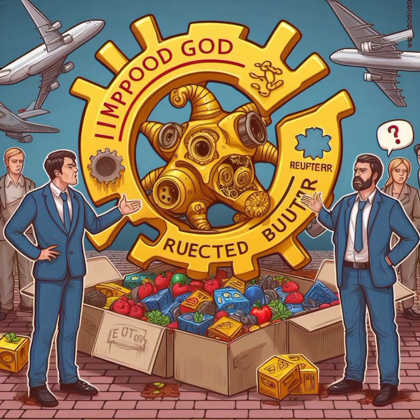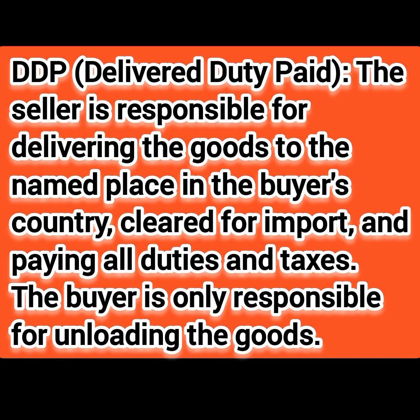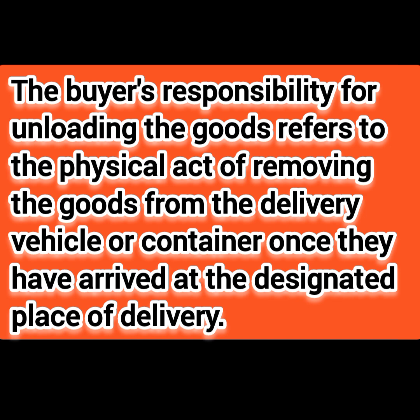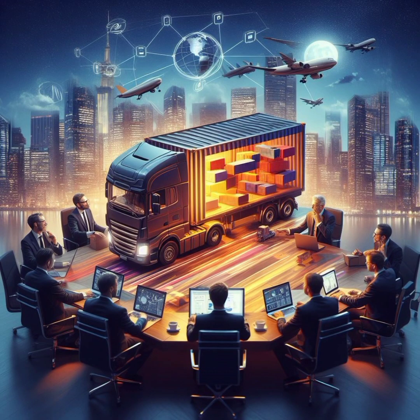If the buyer still says this is not good enough and wants the best offer, you give him the final offer — clause seven — which is DDP, Delivered Duty Paid. In this, you are responsible for delivering the goods to the named place in the buyer's country, cleared for transport, and paying all duties and taxes. The buyer is only responsible for the physical unloading of the goods from the delivery vehicle or container once they arrive at the designated place of delivery.